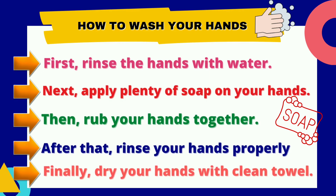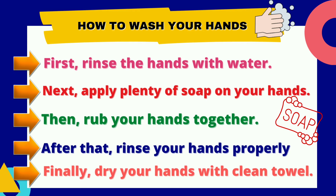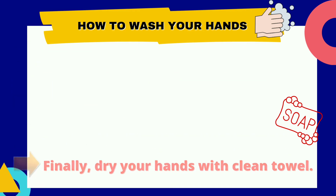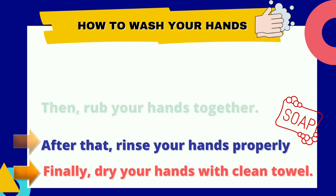Here is the example of directions on how to wash hands. Take note of the comma after the signal words. First, rinse the hands with water. Next, apply plenty of soap on your hands. Then, rub your hands together. After that, rinse your hands properly with water. Finally, dry your hands with a clean towel.